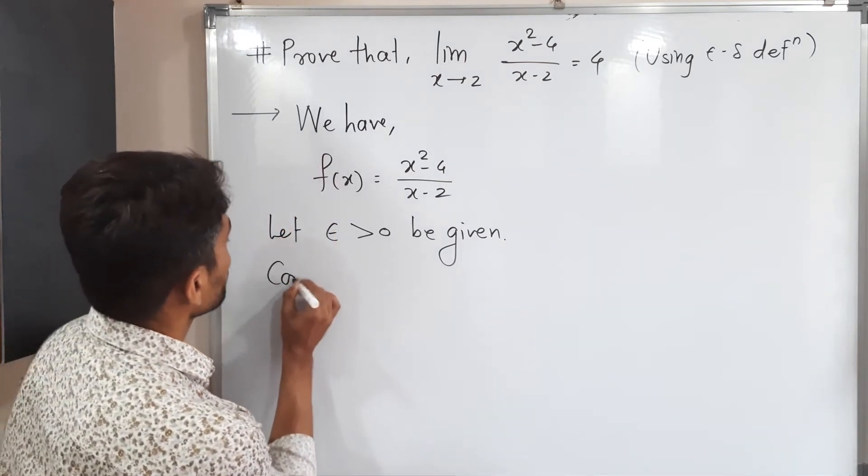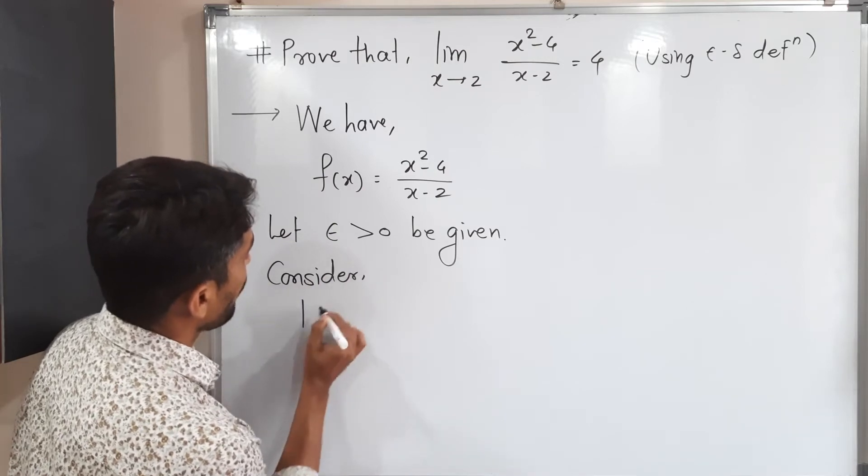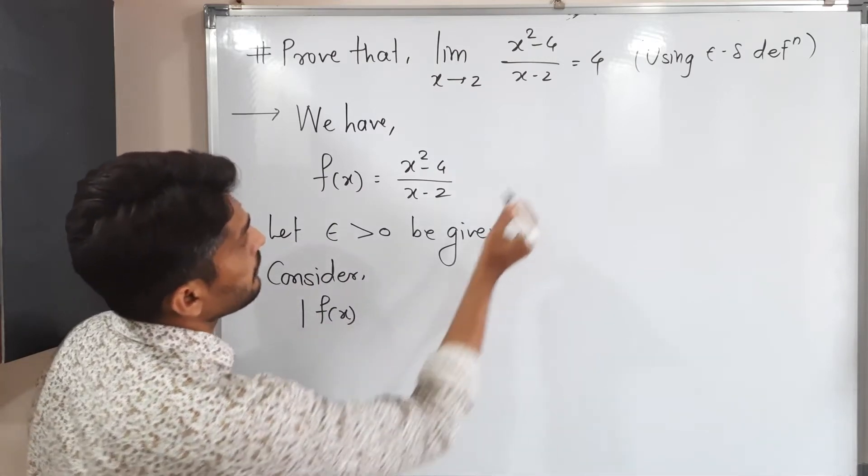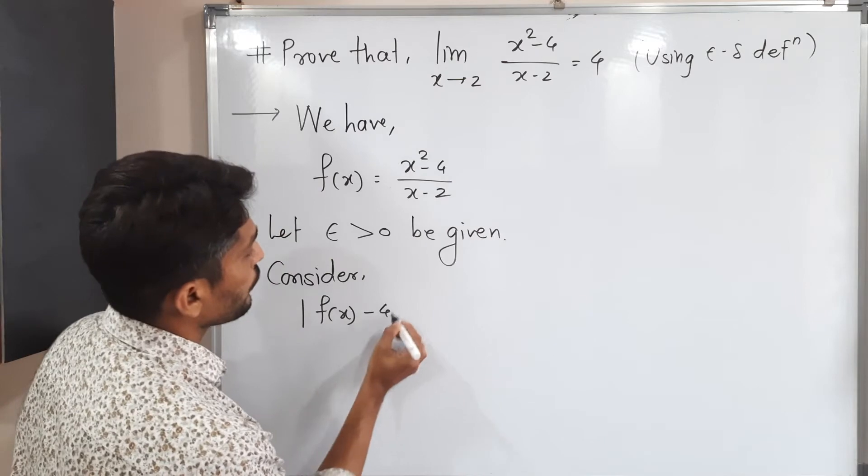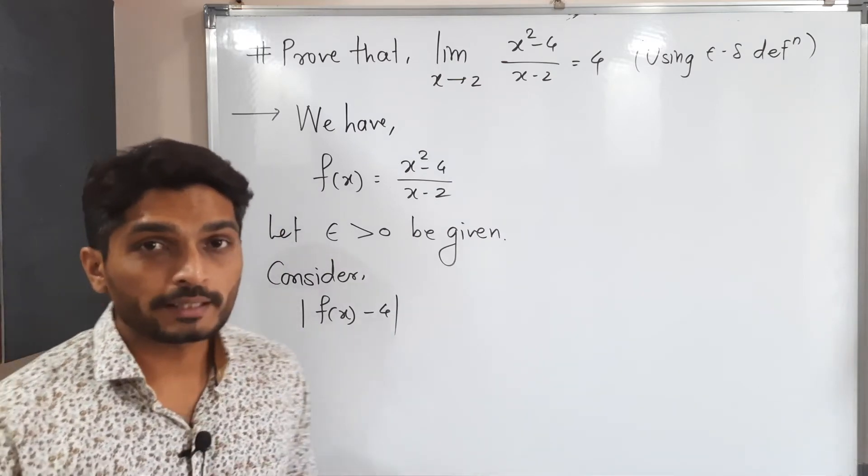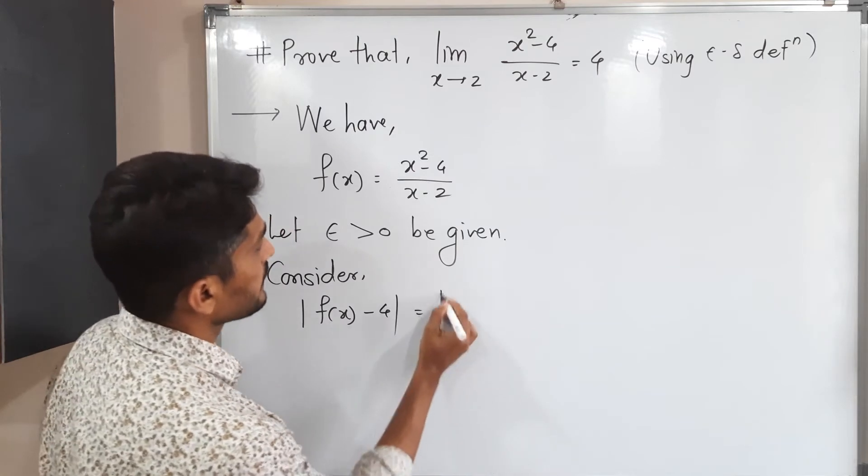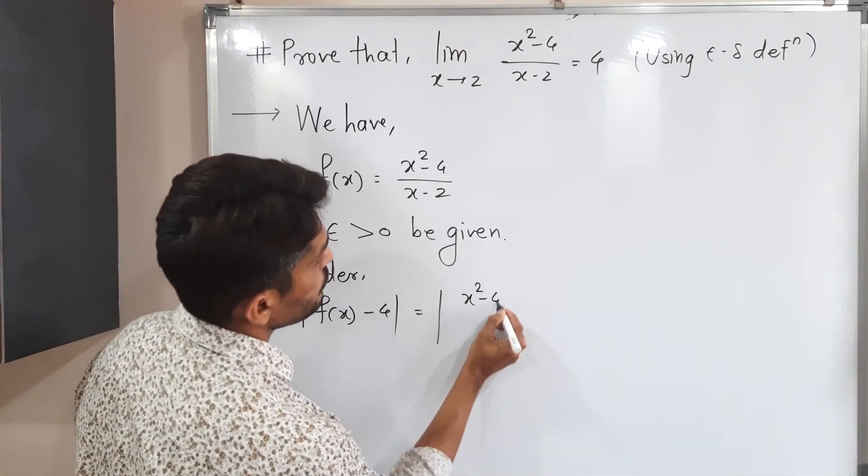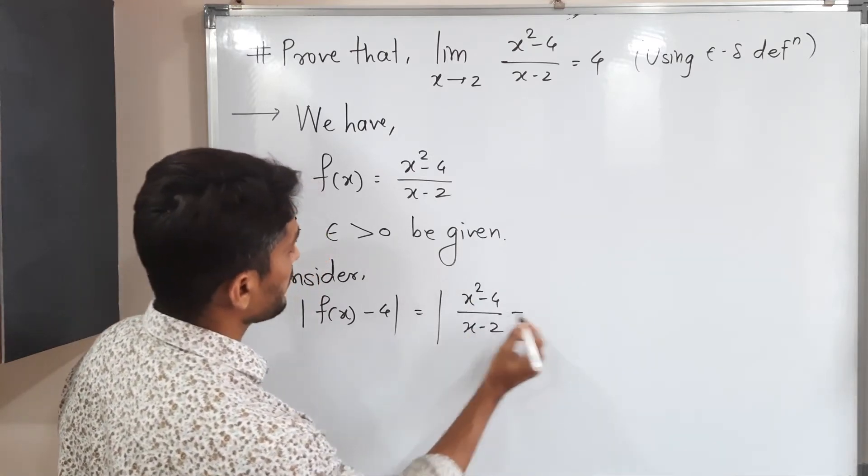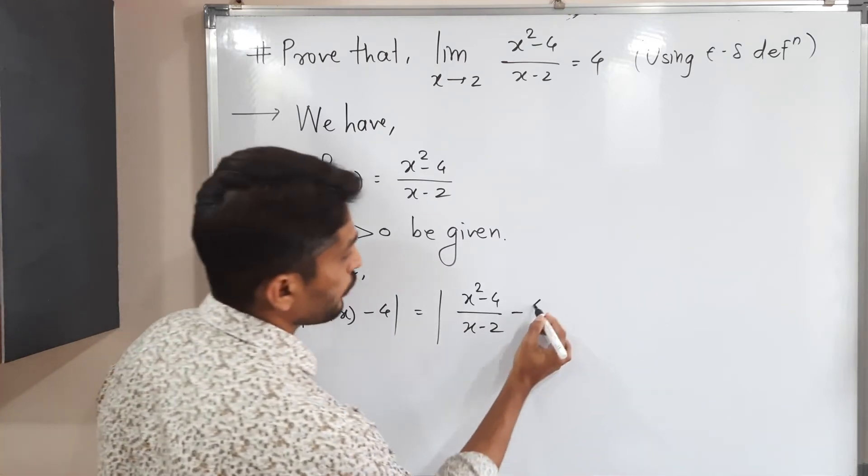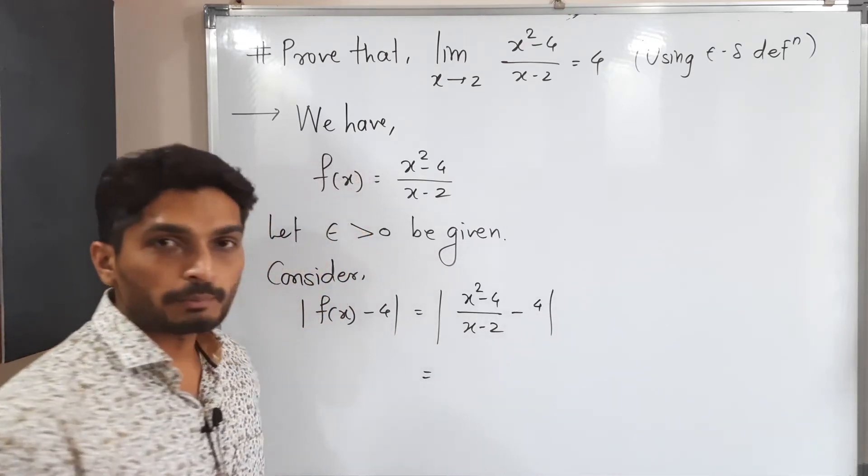So see, consider. I am considering mod f of x minus 4. Since finally we have to prove that this is less than epsilon. So let us simplify it first. What is my f of x? x square minus 4 upon x minus 2. Minus 4 we have 4.